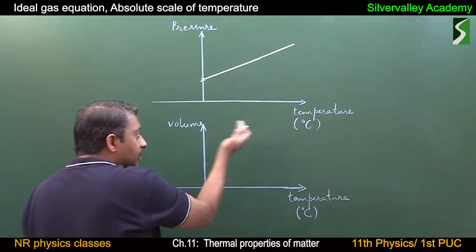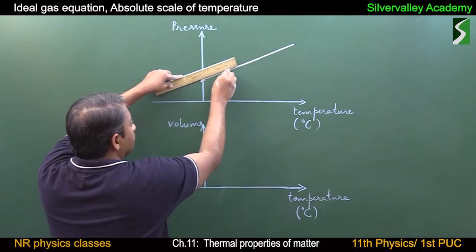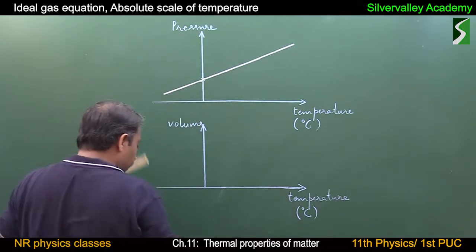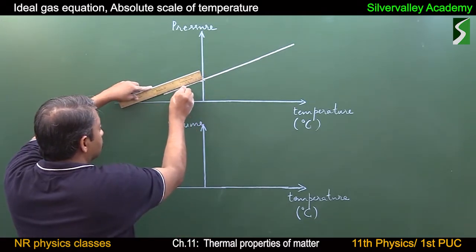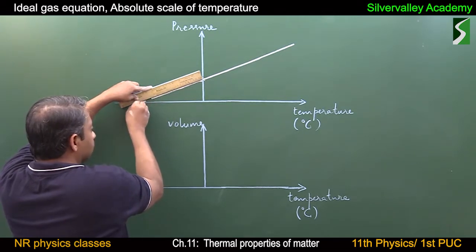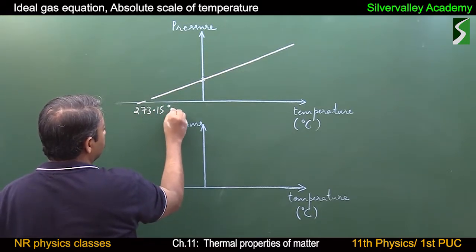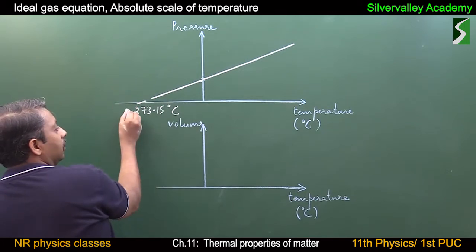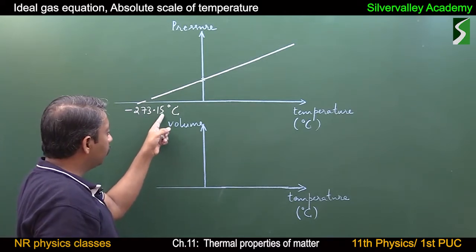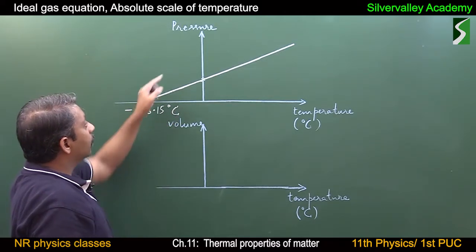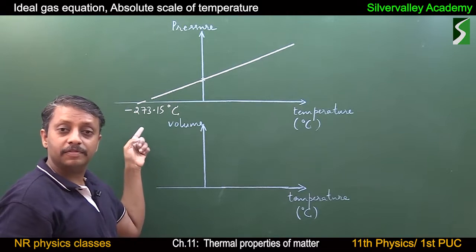If we decrease the temperature below 0 degrees Celsius, pressure also decreases. Decrease in temperature leads to decrease in pressure. Finally, the curve touches the x-axis at some temperature, and that temperature is −273.15 degrees Celsius. It is to the left of the origin, so it is minus. At this lowest temperature, the pressure of the gas becomes zero.